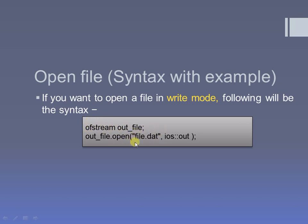The first parameter is the name of the file with the extension, and the second parameter is the opening mode. Here I want to open the file in write mode — output mode — so I am using ios scope resolution out. This is the file pointer, which is used while opening the file. Here you are not just opening a file but actually creating this particular file.